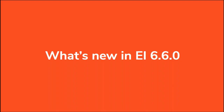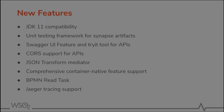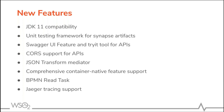Let's now come to the main focus of this webinar: what's new with the Enterprise Integrator 6.6.0 release. There are many new features and improvements that have been shipped with this EI 6.6.0 release. These new features include: JDK 11 compatibility, a unit testing framework for writing unit tests for Synapse artifacts, Swagger UI feature and try-it tool for APIs, cross-origin resource support for APIs, a JSON Transform mediator as a new mediator, comprehensive container-native feature support, BPMN read tasks for the BPS runtime, and Jaeger tracing support for distributed tracing purposes. We will look into each of these in detail in the coming slides.